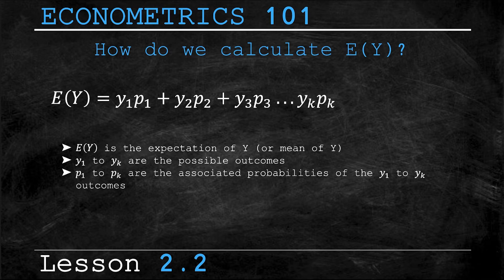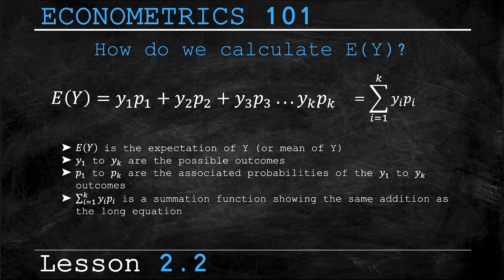Again, assuming that there are k possible outcomes, then lowercase p₁ to pₖ are the associated probabilities to the y₁ through yₖ outcomes. Finally, we have this very confusing looking function. For those of you who are unfamiliar, this is a summation function